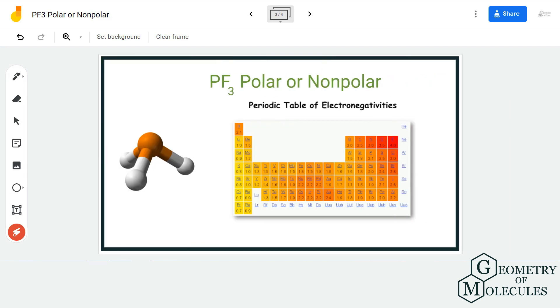So phosphorus has an electronegativity value of 2.19 and for fluorine it is 3.98. So the difference is definitely higher than 0.4, which makes these bonds polar bonds.